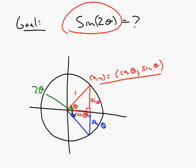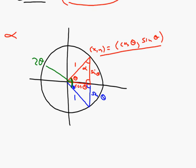We know that this piece here is sine theta also because the triangle is congruent. And this hypotenuse is 1. The last thing I'm going to do is name this other angle up here in the corner — I'm going to call it alpha. So take a careful look at this picture; we're going to look for some relationships.